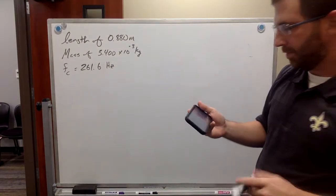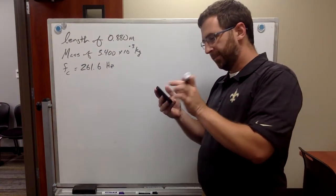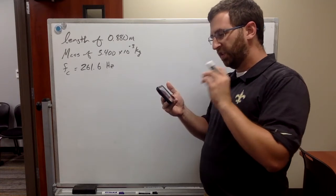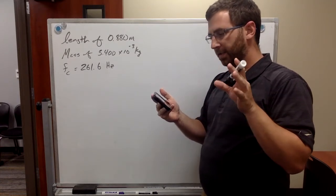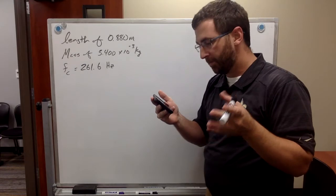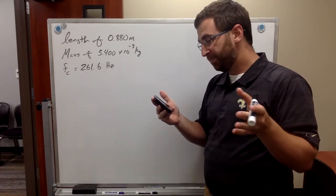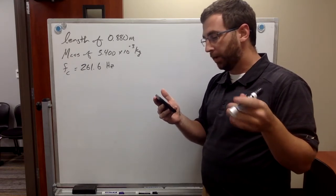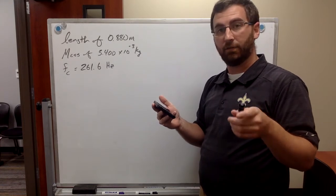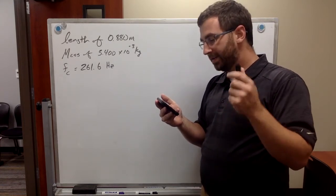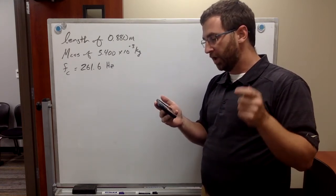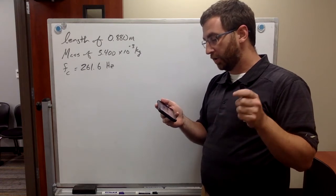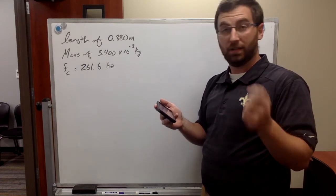We have a problem here on WebAssign. A steel wire in a piano has a length of 0.880 meters and has a mass of 3.4 times 10 to the negative 3 kilograms. To what tension must the wire be stretched so that the fundamental vibration corresponds to the middle C?